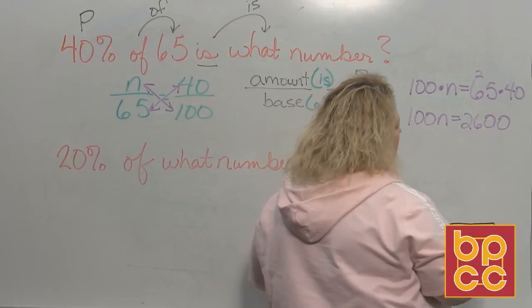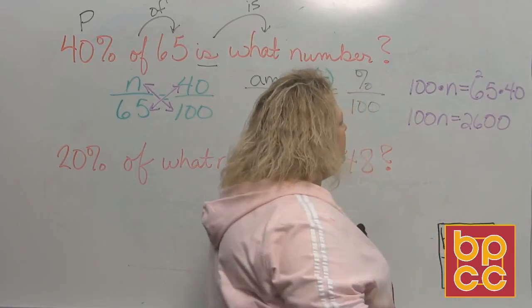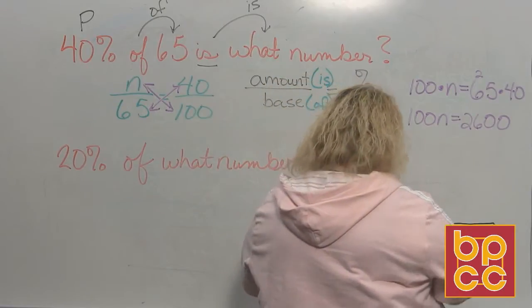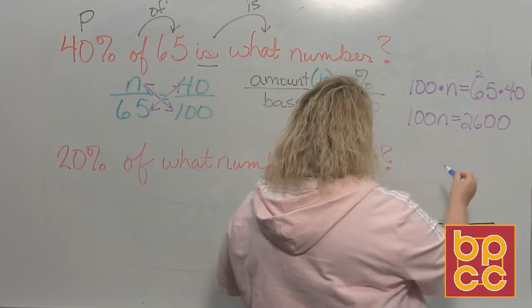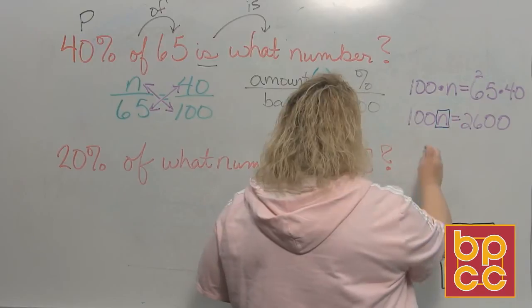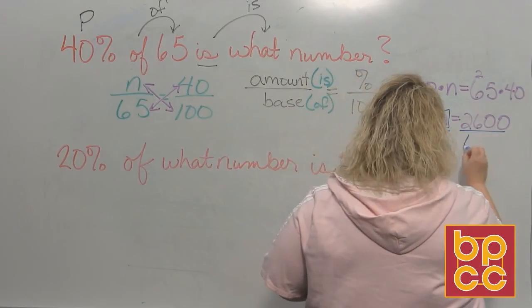So 100 times something is equal to 2600. In order to undo this, you have to get the n by itself. To get the n by itself, we're going to do division. And what do you divide by? You always divide by whatever is attached to that letter. This time we're dividing by 100.